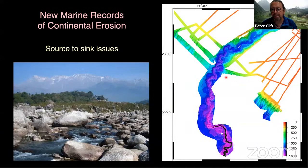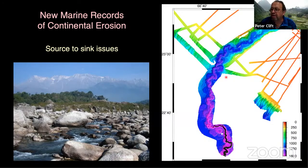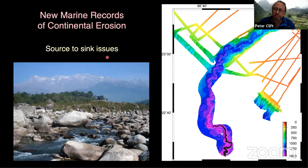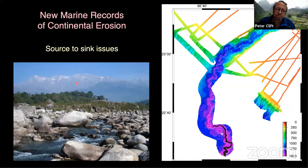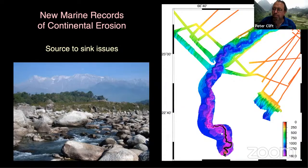We can investigate this further by looking at the record in the marine realm — the point of IODP Expedition 355, as well as the earlier 354 in the Bay of Bengal. To interpret the deep-sea record, however, we need to think about how sediment travels from the mountains — starting as very coarse clasts in the foreland basin at places like Dharamsala in northwest India — eventually making their way to the Arabian Sea into the Indus submarine canyon.